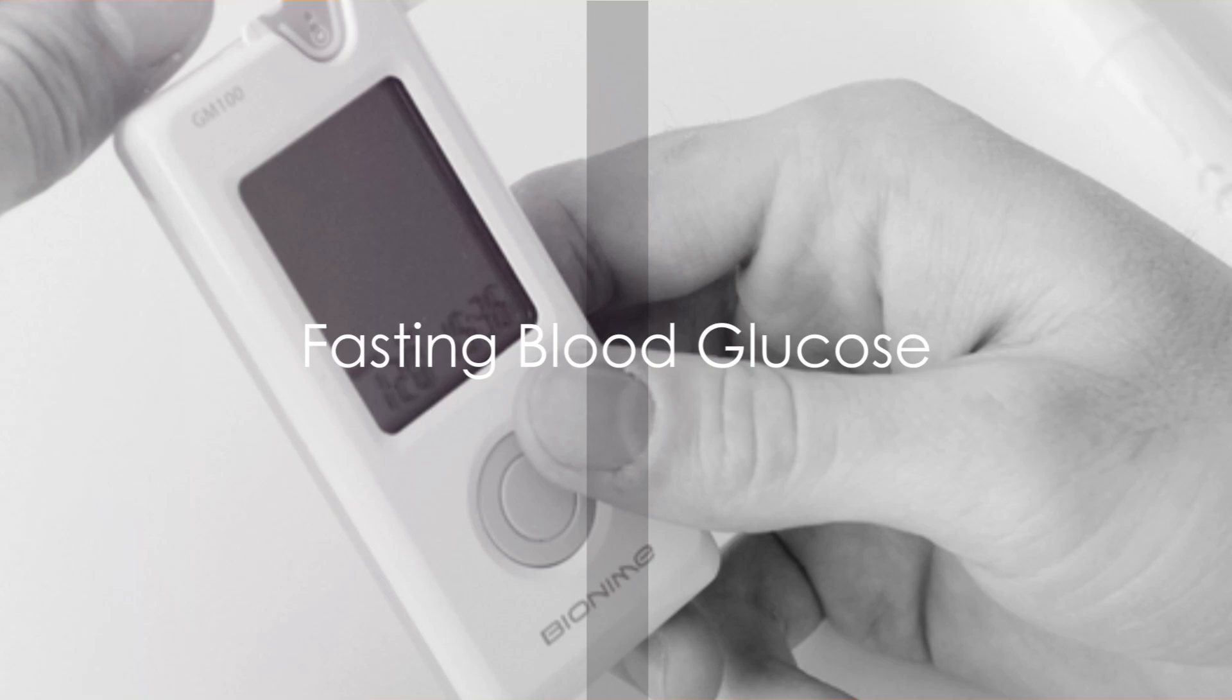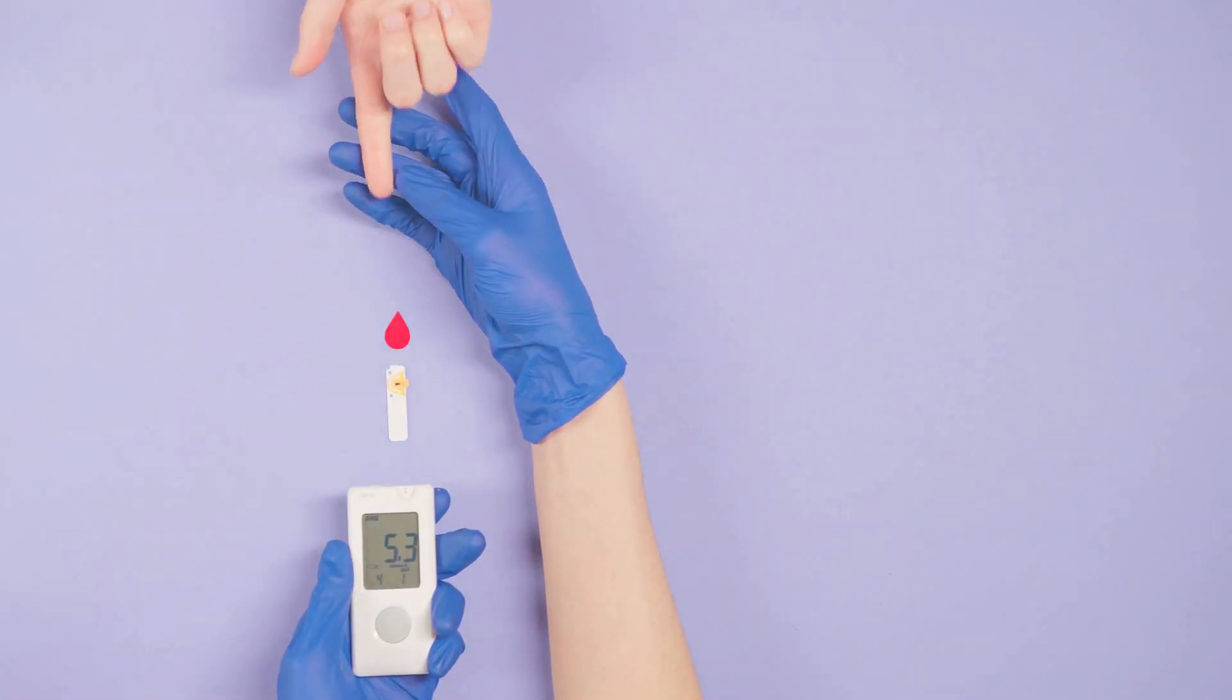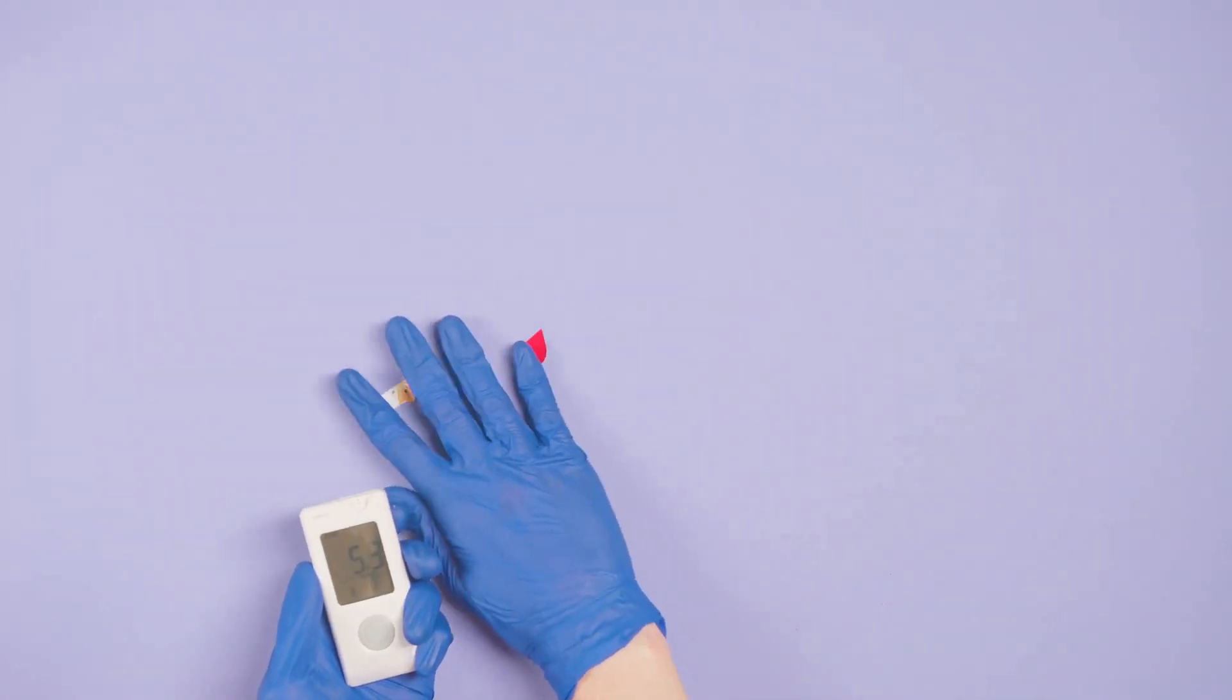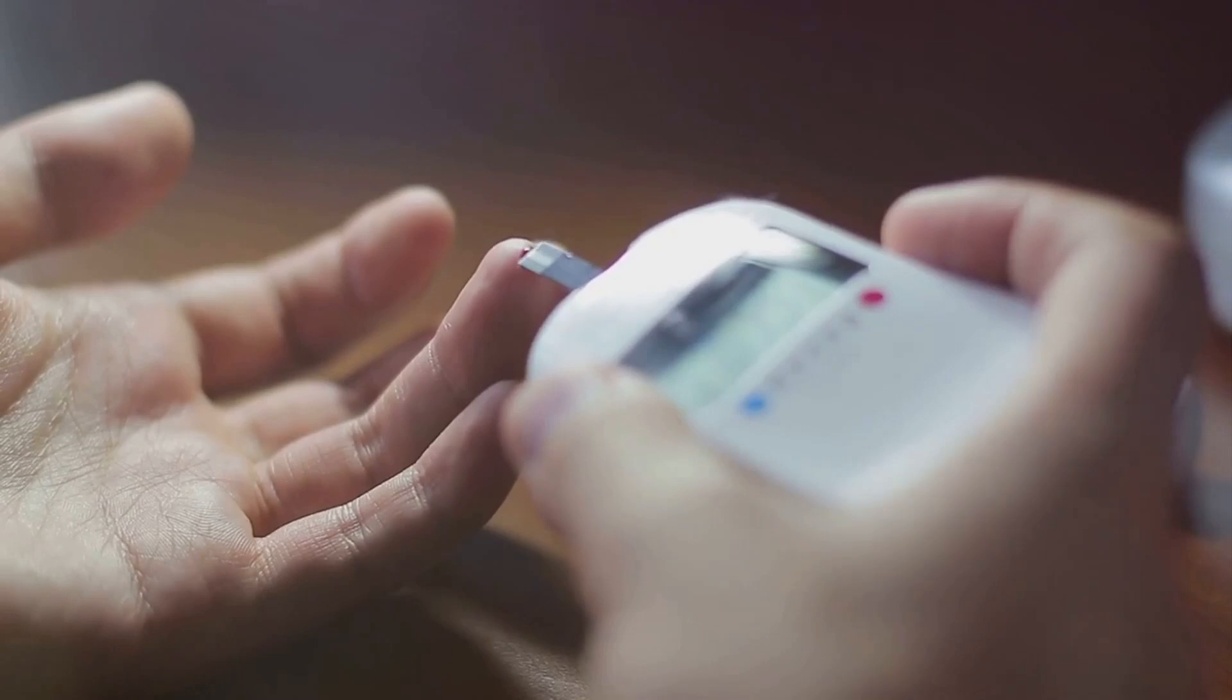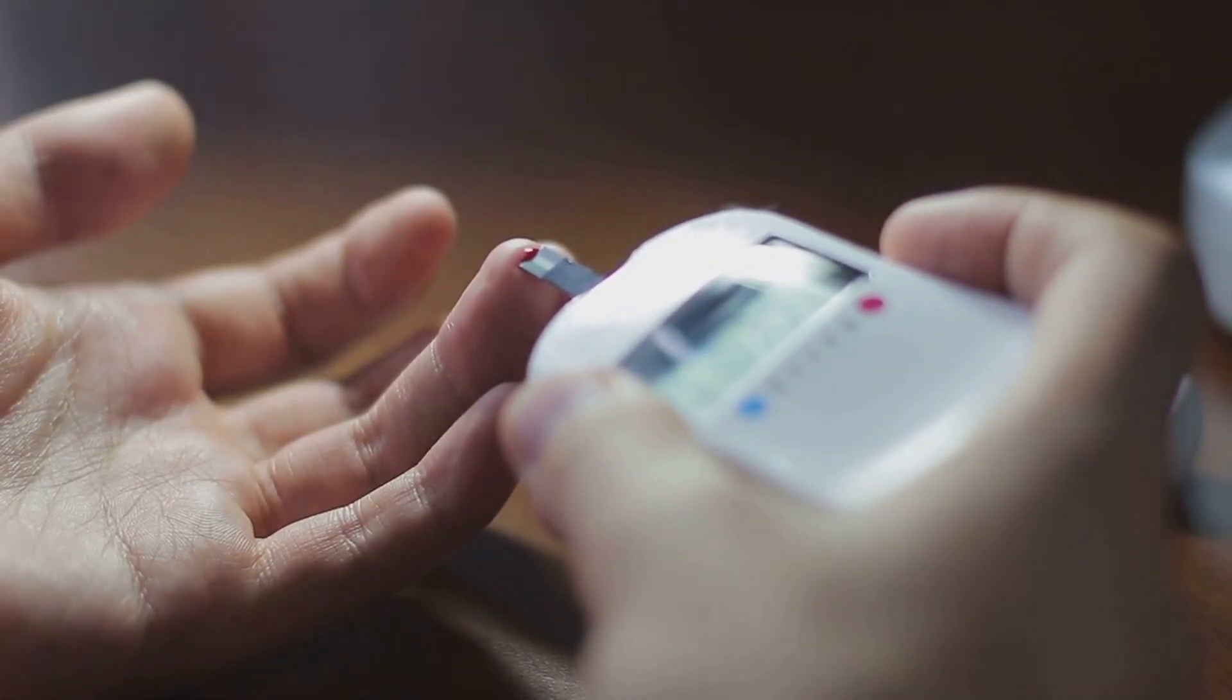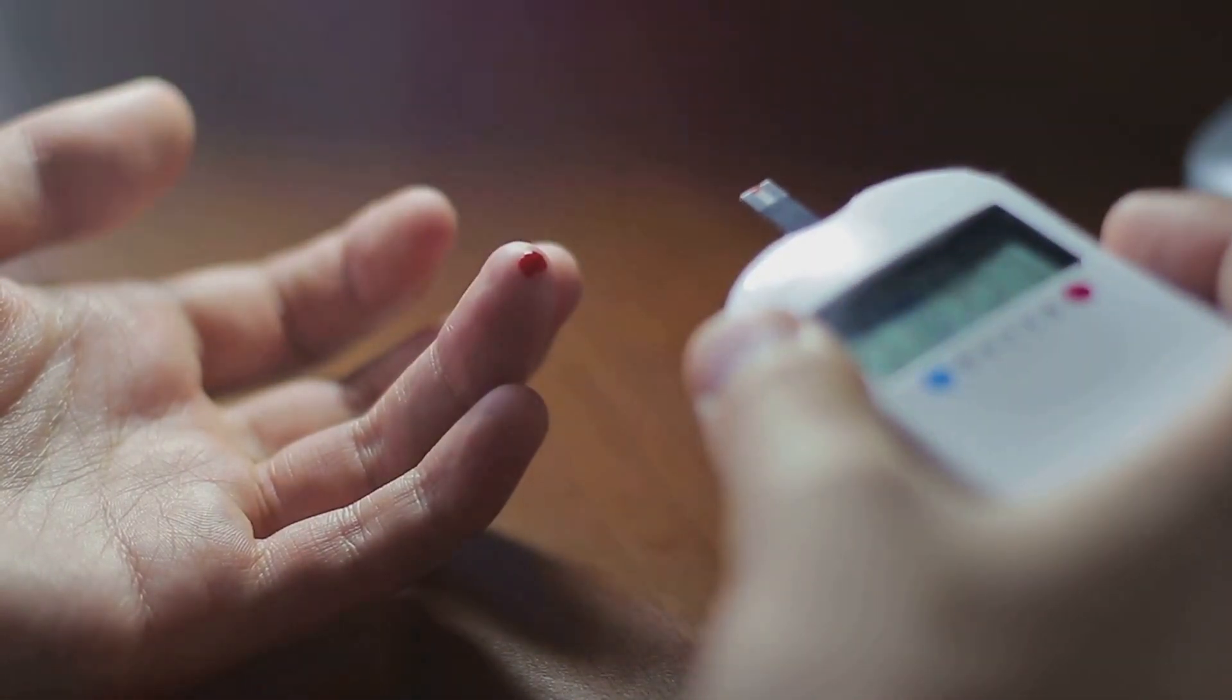First up, we have fasting blood glucose. This is a measure of the sugar levels in your blood after an overnight fast, giving us a snapshot of how your body is managing glucose when you're not eating. It's a simple process that you can do at home with a glucose meter. However, it's worth noting that factors like stress, sleep quality, and even the previous night's dinner can influence your results.